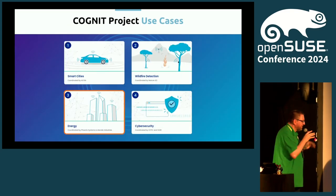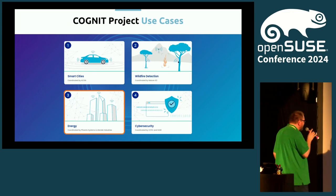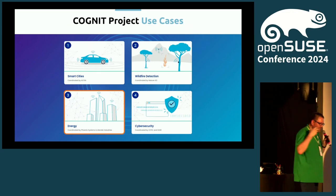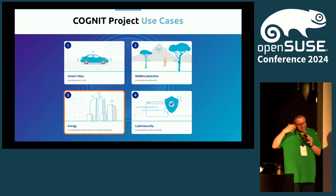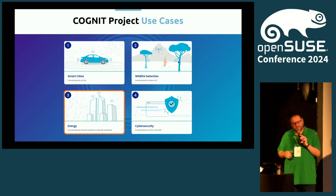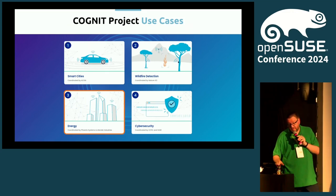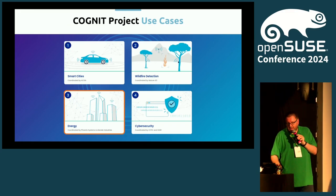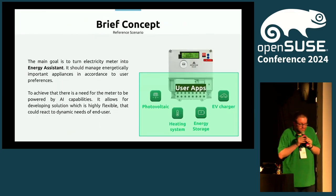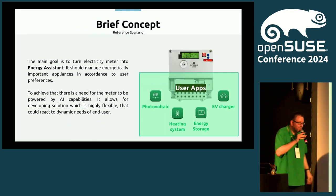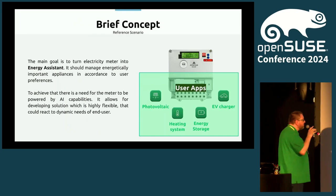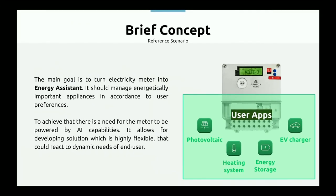The energy use case makes it very obvious why edge computing is a challenging problem. You could throw a lot of money at every device, but that wouldn't be cost-efficient. This use case is a testbed in Poland where smart energy meters are used to optimize the usage of locally produced energy.